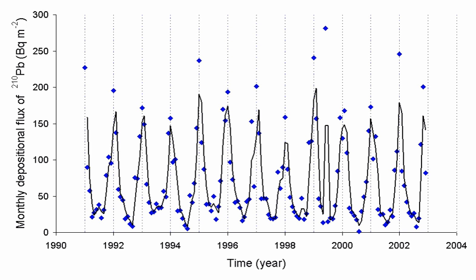Although colorless at standard temperature and pressure, when cooled below its freezing point of 202 K, radon emits a brilliant radioluminescence that turns from yellow to orange-red as the temperature lowers. Upon condensation, radon glows because of the intense radiation it produces. Radon is sparingly soluble in water, but more soluble than lighter noble gases. Radon is appreciably more soluble in organic liquids than in water.